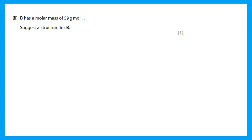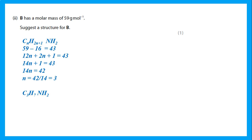B has a molar mass of 59 and is an amine, so it contains NH₂. Removing the NH₂ group (mass 16) leaves an alkyl group of mass 43. Using CₙH₂ₙ₊₁: 12n + 2n + 1 = 43, so n = 3, giving C₃H₇. Therefore B is propylamine (C₃H₇NH₂).